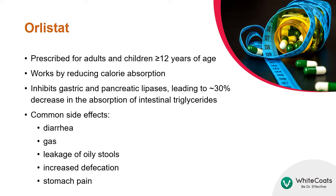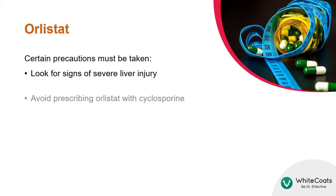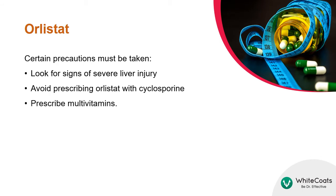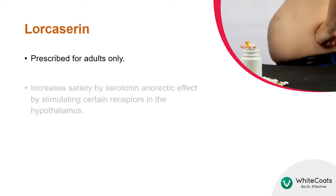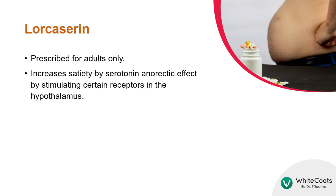Orlistat works by reducing calorie absorption. It inhibits gastric and pancreatic lipases, leading to approximately a 30 percent decrease in the absorption of intestinal triglycerides and thus calories. The drug can cause side effects as listed here. Rare cases of severe liver injury have been reported, so look for signs of severe liver injury when on the drug. Avoid prescribing Orlistat with cyclosporine, and advise patients to take multivitamin supplements.